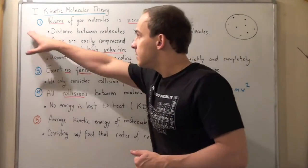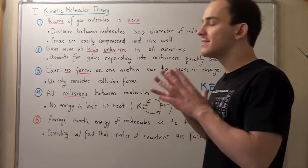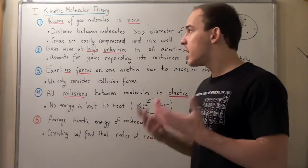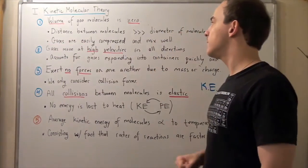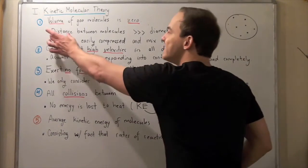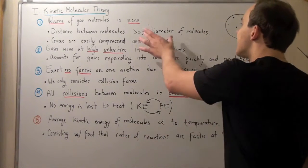The first assumption is the fact that volume of gas molecules is zero. So, where does this assumption come from? Well, it comes from the observation that gases are easily compressed and mixed very well. And this is because the distance between the molecules is much larger than the size of the molecules.